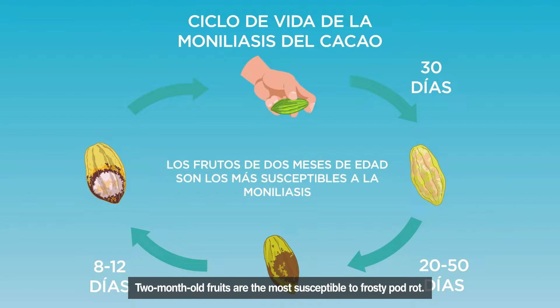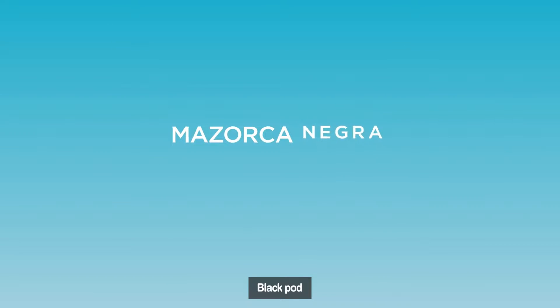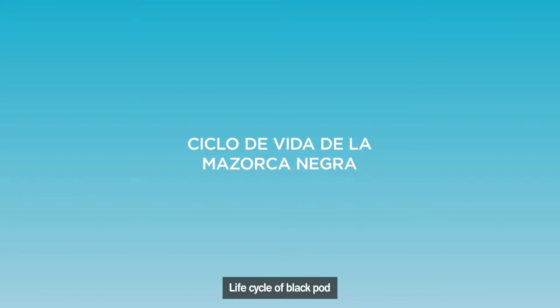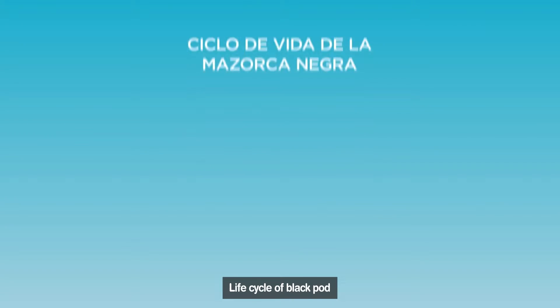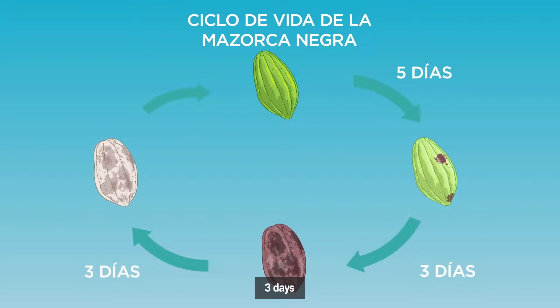Fruits around two months old are the most susceptible to frosty pod rot. Unlike frosty pod rot, cacao fruits are more susceptible to black pod when they are five months old or close to ripening and when there are heavy rain events.